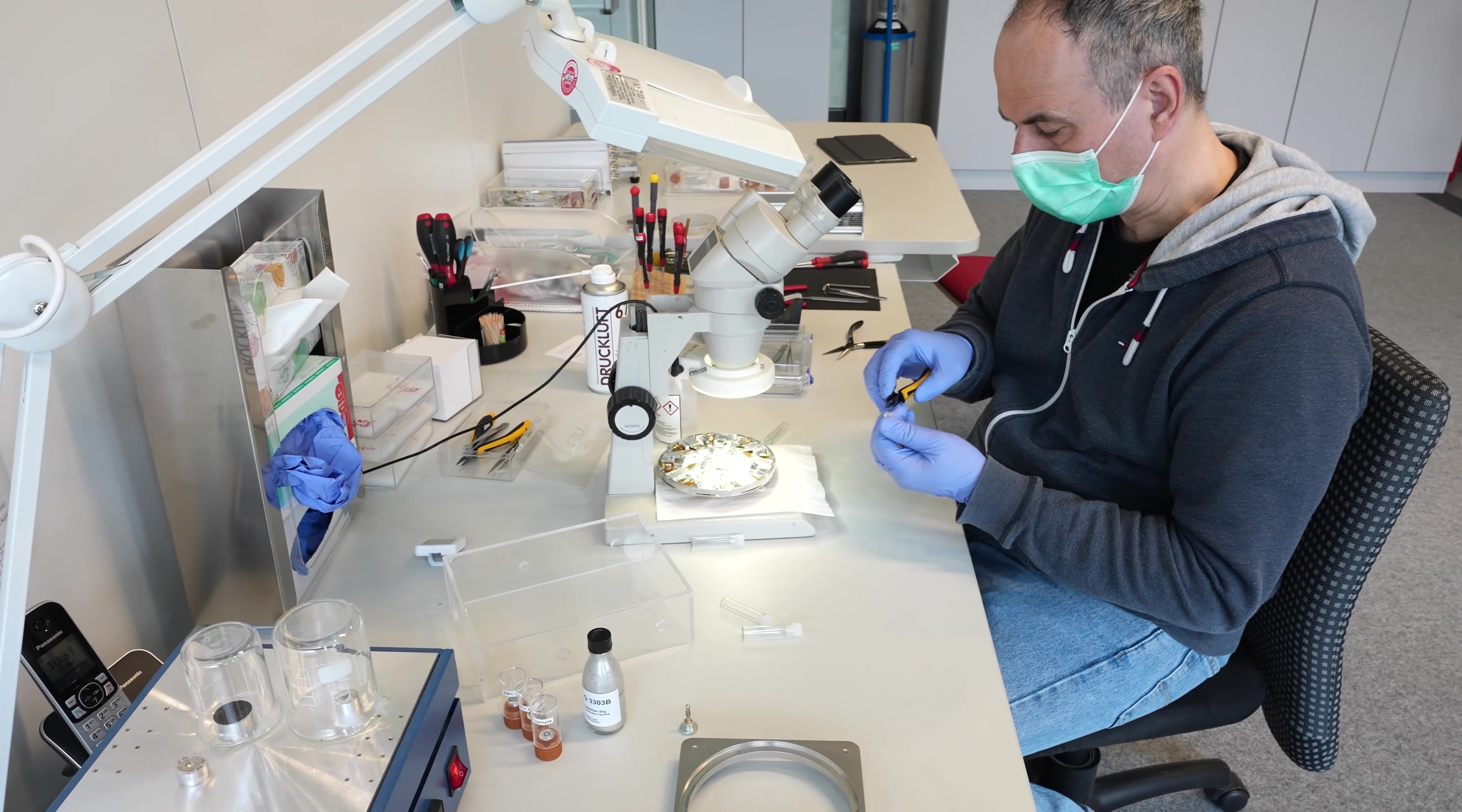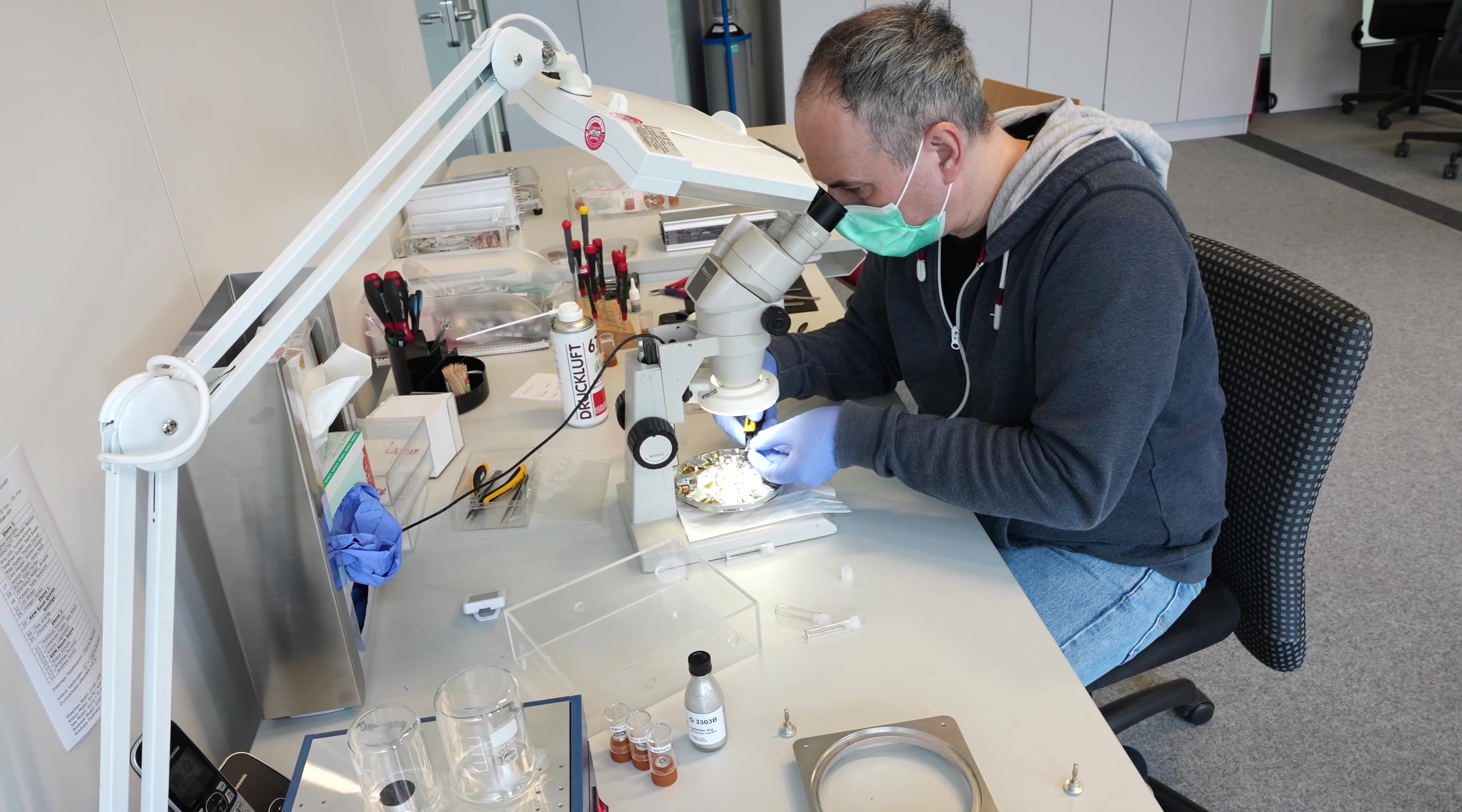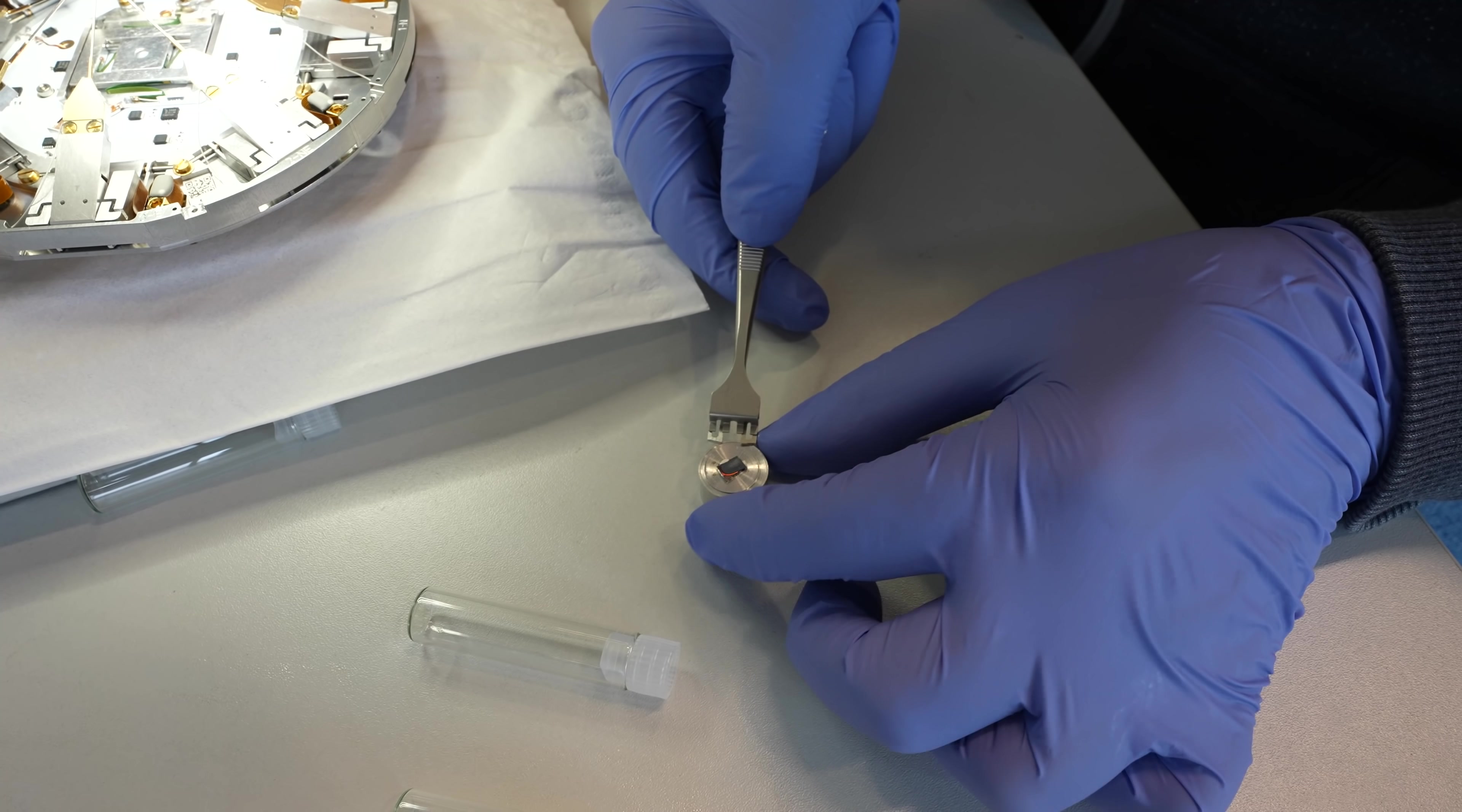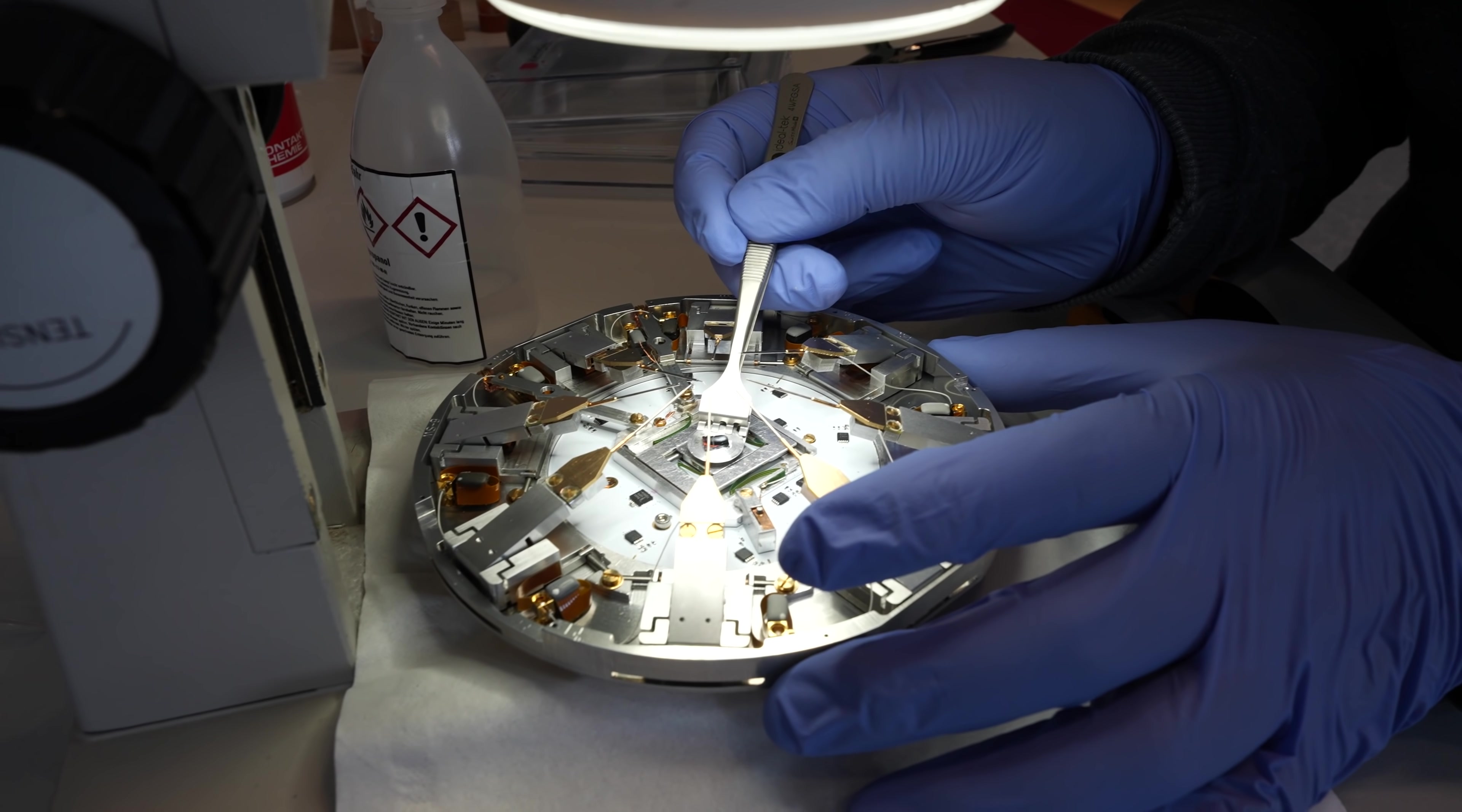After fixing four needles in the probe shuttle - we're only using four out of eight today, we only need four - we will put back the chip inside the probe shuttle. Meanwhile the chip spent several minutes on a heating element at about 90 degrees Celsius just to make sure there are no residues out of the solvent from the silver conductive paint.